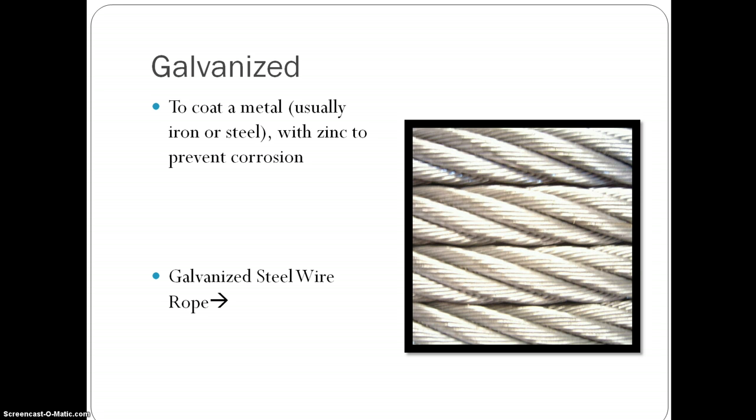Galvanized metal is when you coat a metal, usually with iron and steel, with zinc to prevent corrosion. So, as you can see on the right, there's a galvanized steel wire rope, and basically when you galvanize a metal, just like it says up there, you're protecting it and you're making it last longer and look prettier, basically.